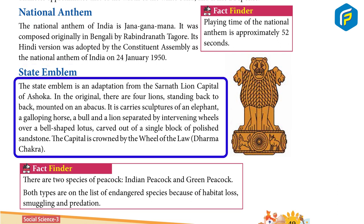State Emblem: The State Emblem is an adaptation from the Sarnath Lion Capital of Ashoka. In the original, there are four lions standing back-to-back, mounted on an abacus. It carries sculptures of an elephant, a galloping horse, a bull and a lion, separated by intervening wheels over a bell-shaped lotus, carved out of a single block of polished sandstone. The capital is crowned by the wheel of the Dharma Chakra.